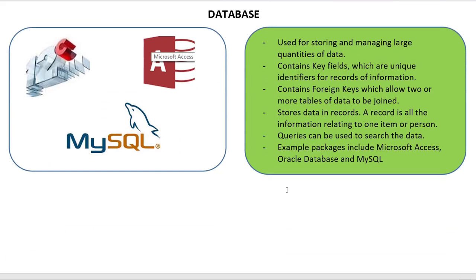Next we have databases. Databases are used for storing and managing large quantities of data. They contain a key field, which is a unique identifier for a record of information, and foreign keys, which allow two or more tables to be joined together. Data is stored in records, where a record is all the data pertaining to one individual — for example, name, address, telephone number, etc. Databases use queries to search for data. Common examples include Microsoft Access, Oracle Database, and MySQL.